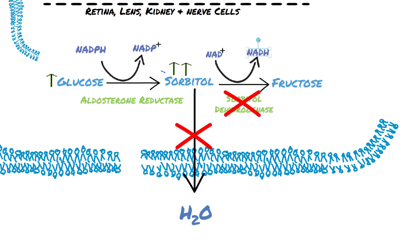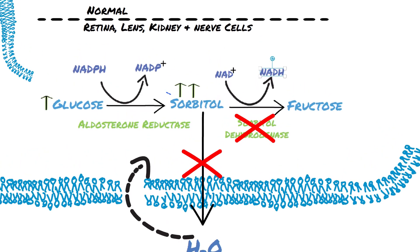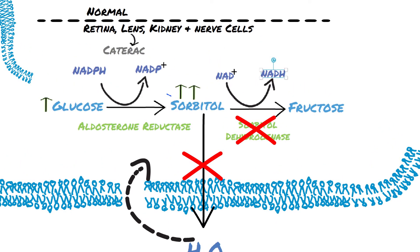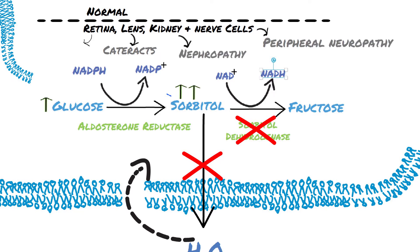Because sorbitol cannot pass through cell membranes, it accumulates inside the cell. Sorbitol has an osmotic effect — it drags water into the cells. This water retention causes swelling and bursting of cells in the lens, which causes cataracts.